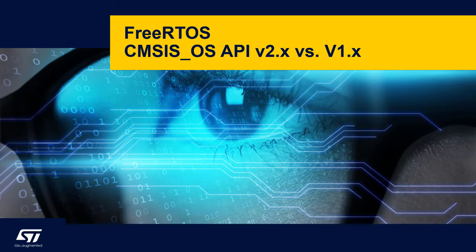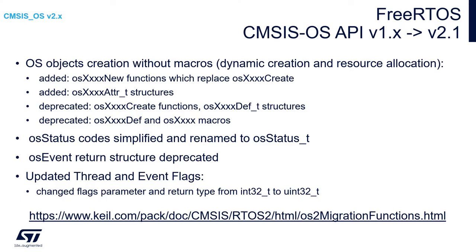Let's spend a while on the differences between CMSIS-OS API in version 2 and version 1. So what are the differences between CMSIS-OS API version 1 to version 2?